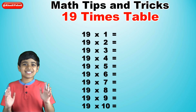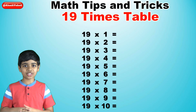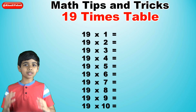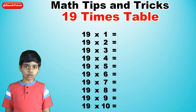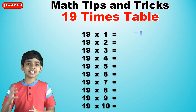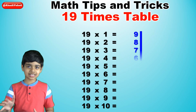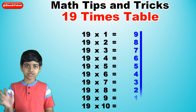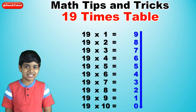Next, for the 1s digits, this is the trick: we just write all of the numbers from 9 to 0 in descending order. So: 9, 8, 7, 6, 5, 4, 3, 2, 1, and 0.